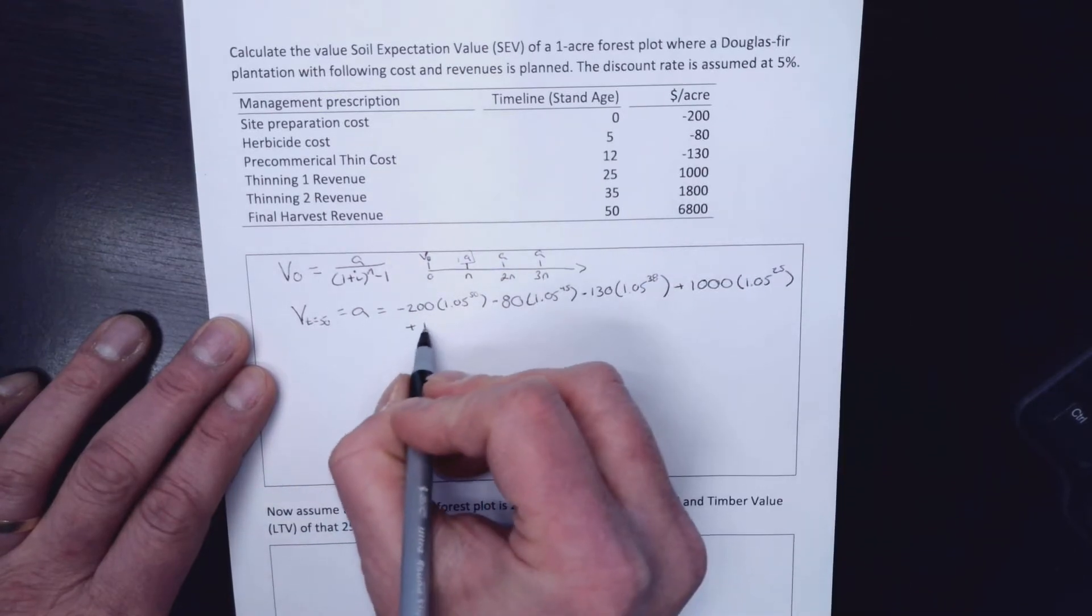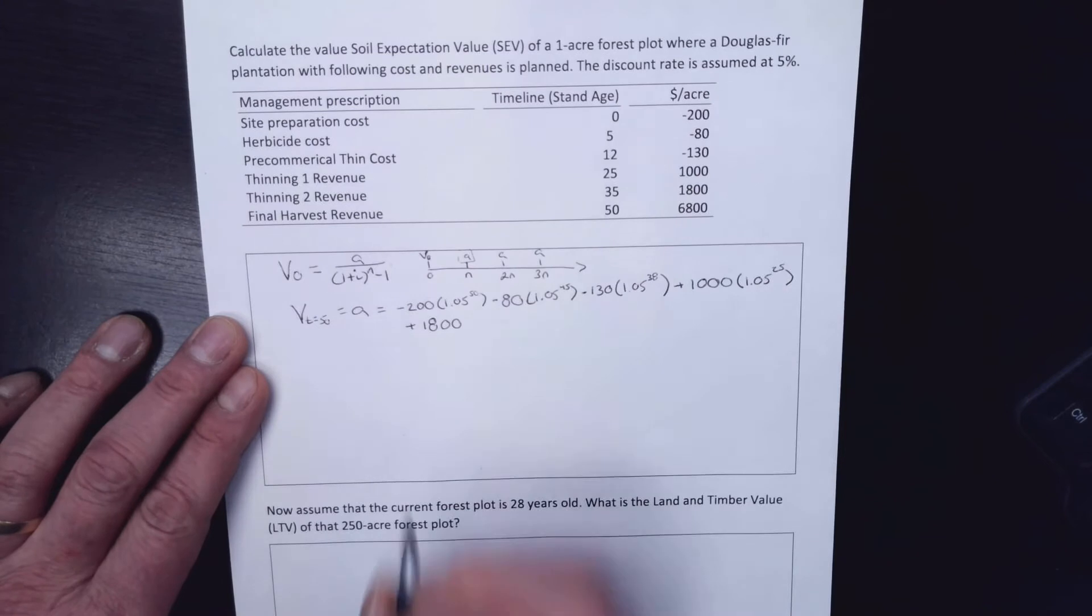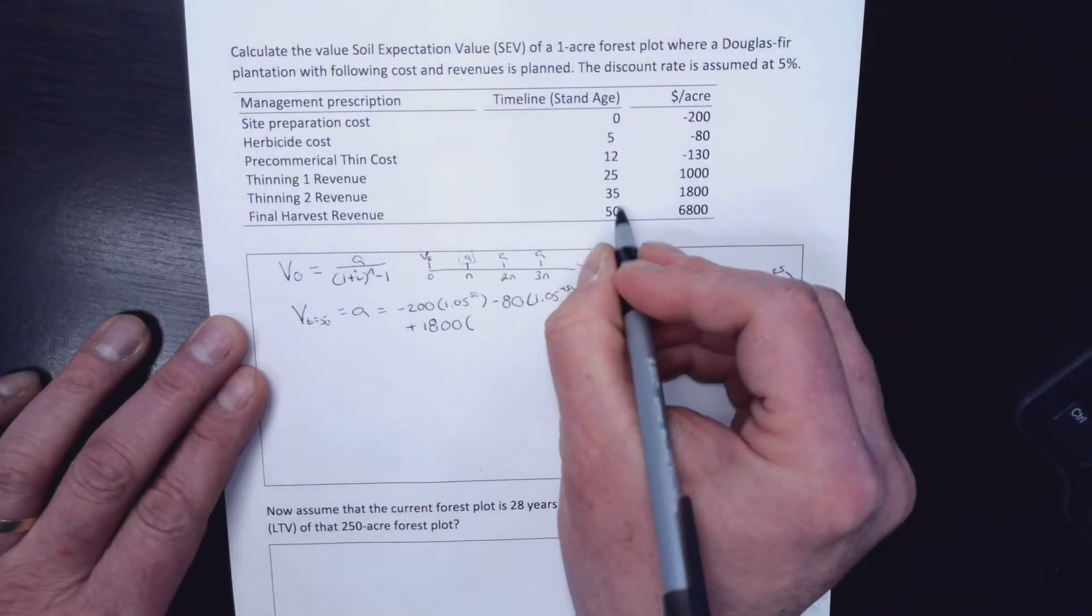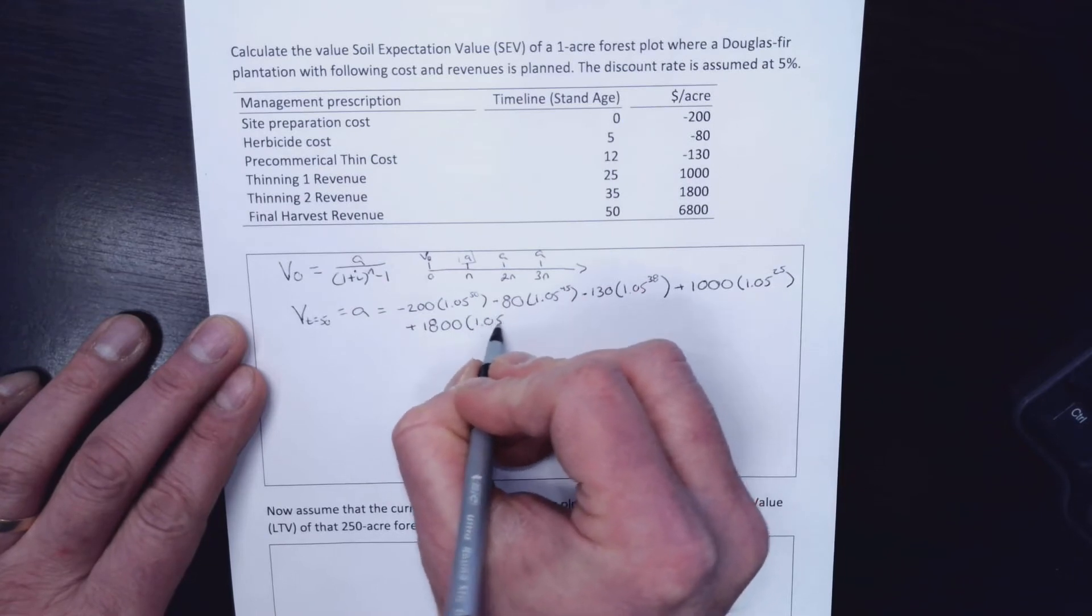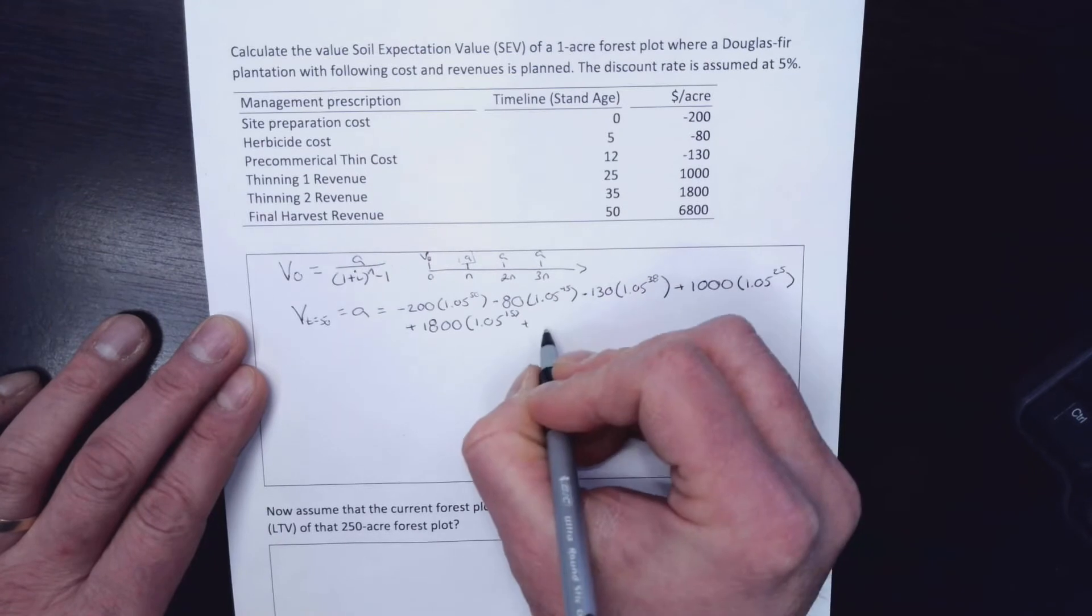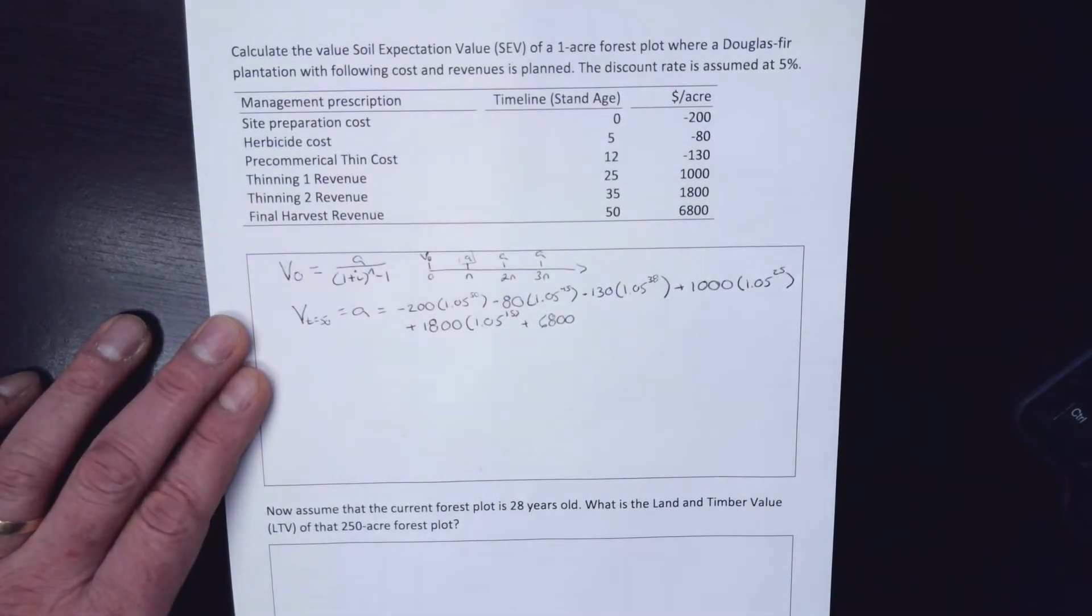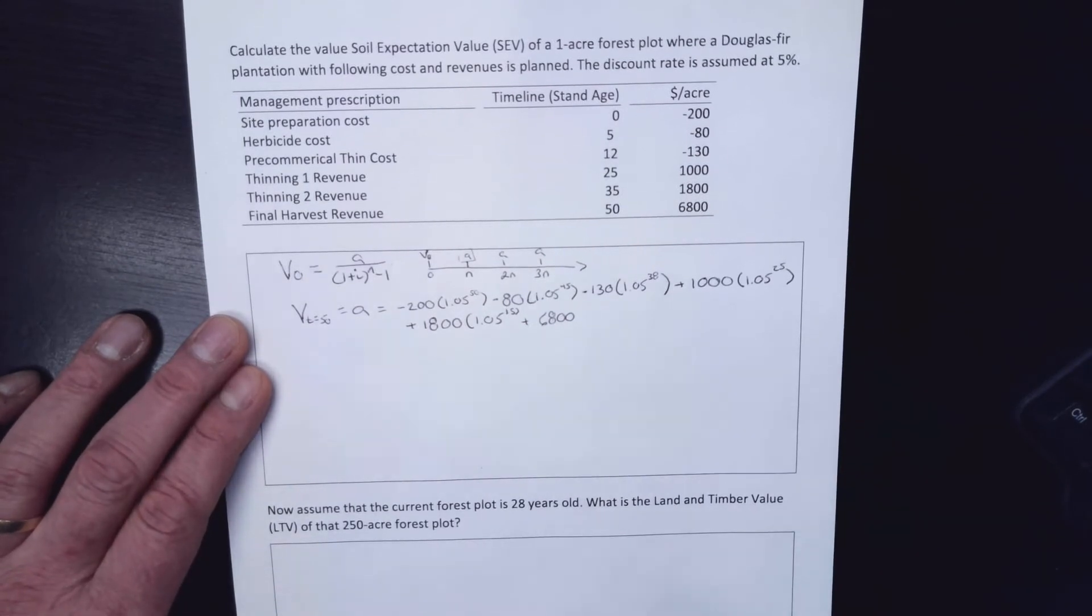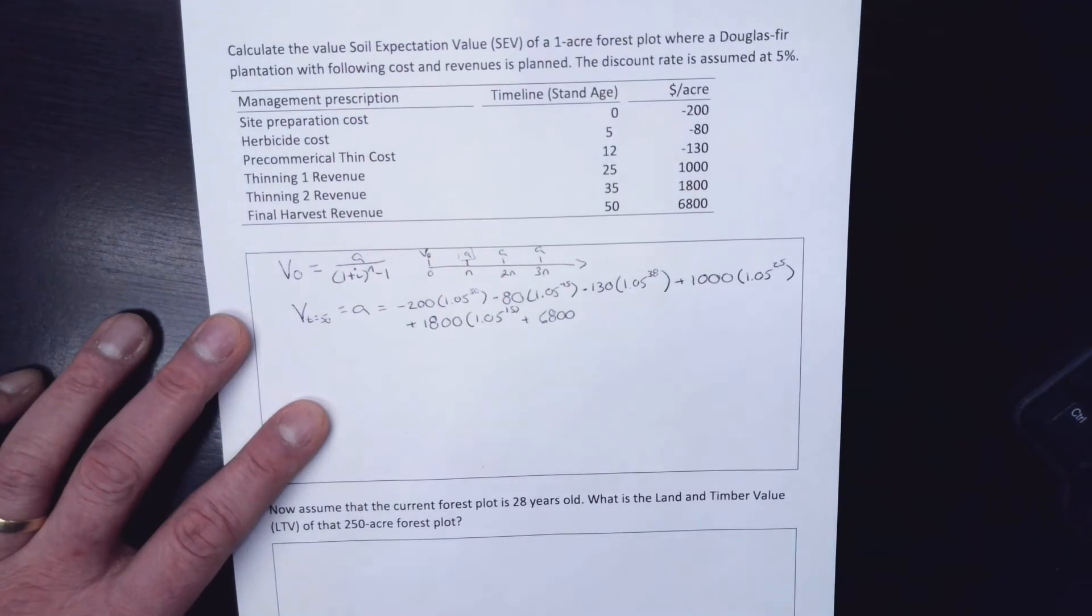I'll continue it down here. So I'm going to add on the $1,800 from the second thin, maybe some pulpwood coming out of it there. And it's got to go 15 years to get from 35 to 50. So 1.05 to the 15. And then I can just add my $6,800. I'm going to cut some saw timber and that sort of thing at the end. And then that will start to cycle over because I'll be planting it in that same year. It's already there. I don't need to put it anywhere.